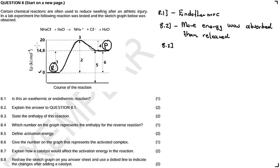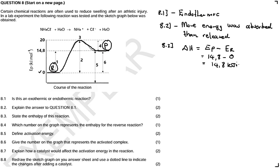So enthalpy — it's delta H — which is the energy of products minus the energy of reactants. The energy of our products is 14.8, minus the energy of the reactants which is zero, so the answer is 14.8 kilojoules per mole. That is our answer.